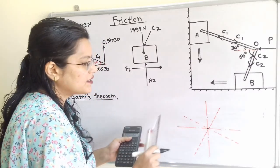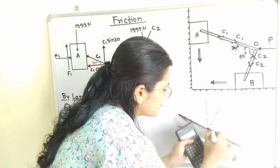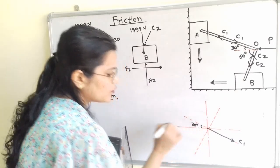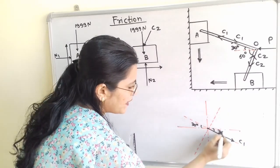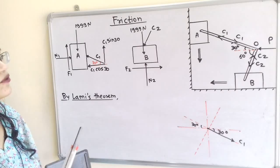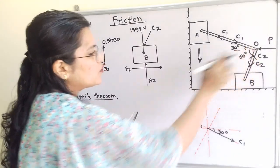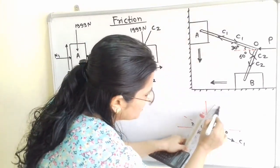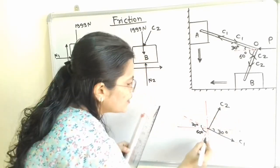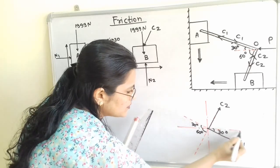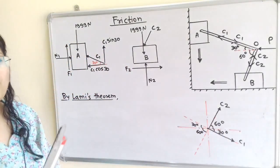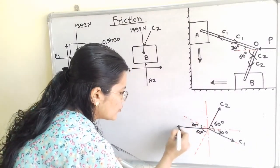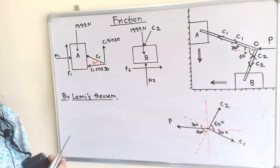To apply Lamy's theorem, all forces must have outward directions from center O. Since C1 is directed toward O, we extend C1 into the opposite quadrant, where it makes an angle of 30 degrees with the horizontal. Similarly, C2 is extended into the opposite quadrant, making an angle of 60 degrees with the horizontal. Force P is along the horizontal direction outward from O.